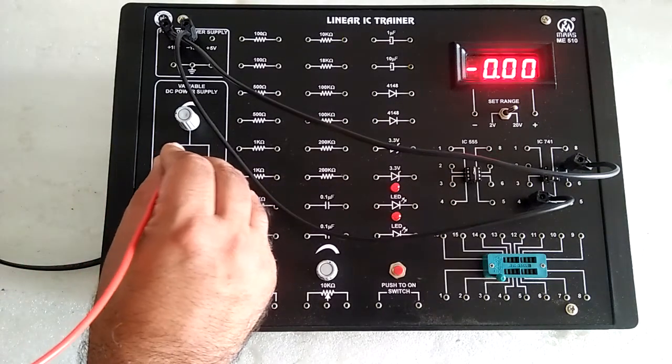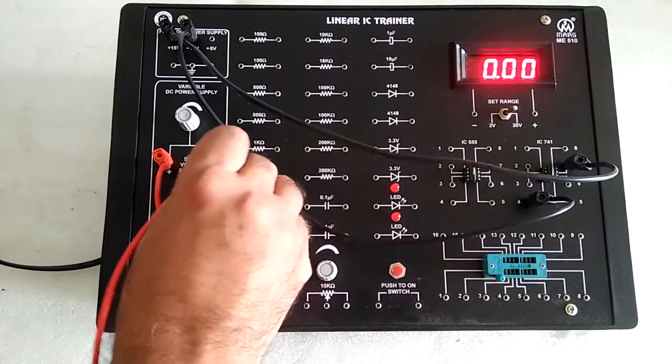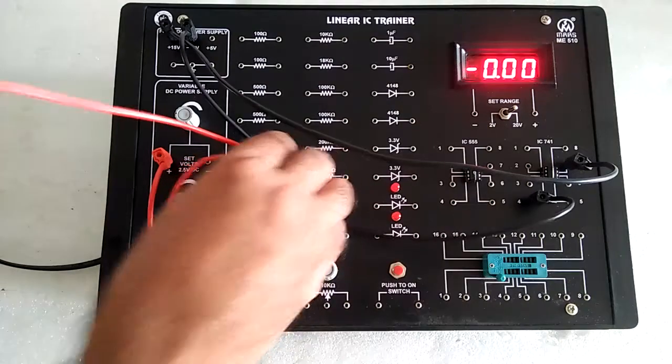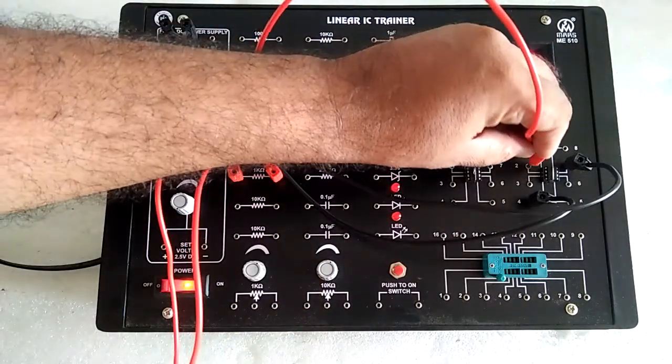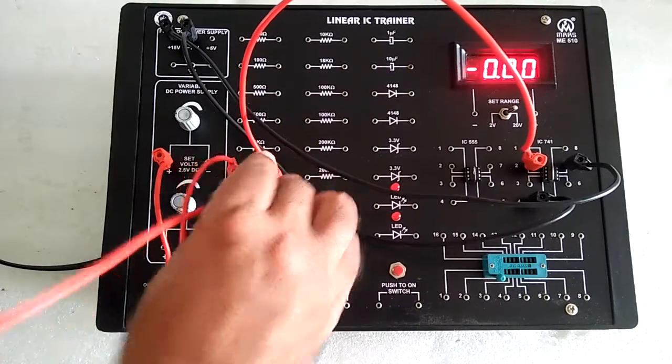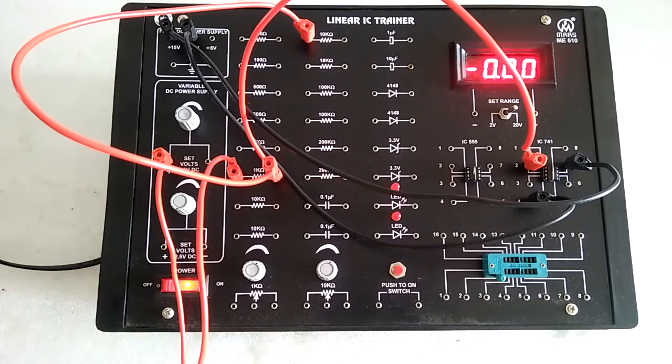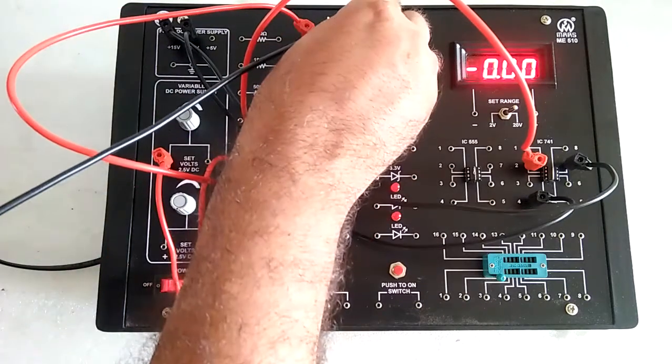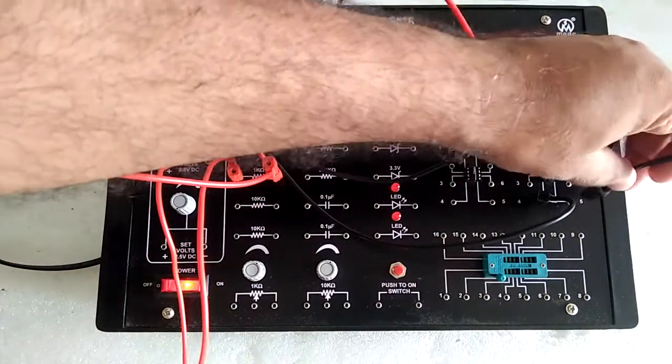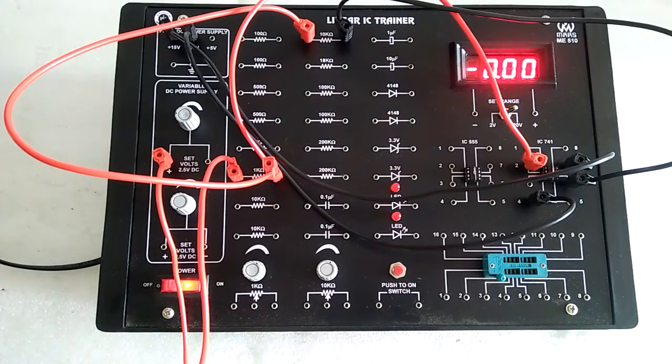The positive of supply first goes through 1 kilo-ohm resistor, then to pin 2. From pin 2, choose the feedback resistance RF, which is 10 kilo-ohm, and connect it to pin 6 of IC741.